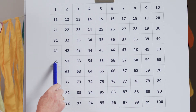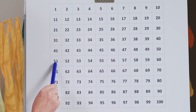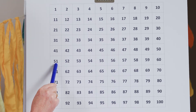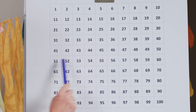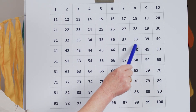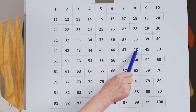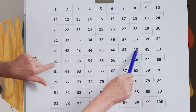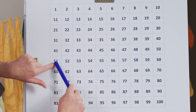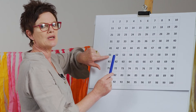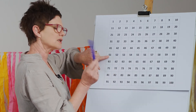Okay, 51 minus 3. Let's think about this one. 3 less than 51. 3 less than 51 is 48. We've jumped 1, 2, 3. Okay, that's a little bit trickier. Let's try another one.